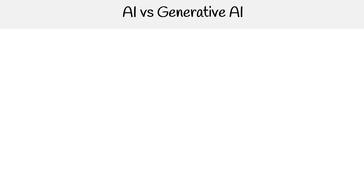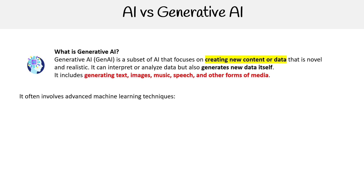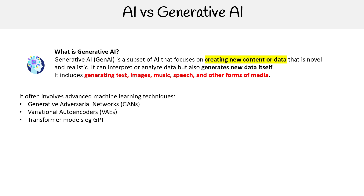Let's talk about generative AI. Generative AI is a subset of AI focusing on creating new content or data that is novel and realistic. It can interpret or analyze data, but also generates new data itself. It often involves advanced machine learning techniques — we have our GANs, our VAEs, our GPTs, and transformer models.